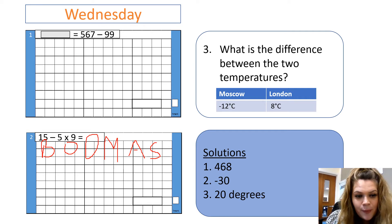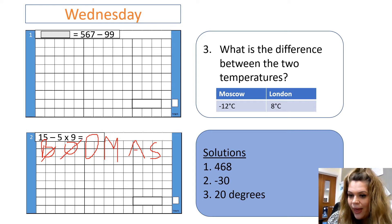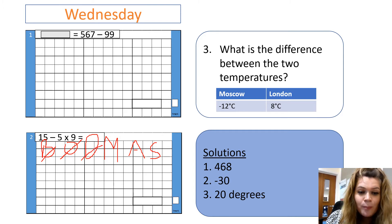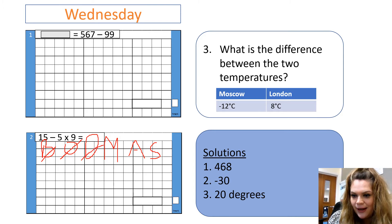So, I can see I've got no brackets, so I don't need to use that. I can see I've got nothing to order, I've got nothing to square or cube. I can see I've got no division, but I do have a multiplication. I've got 5 times 9. 5 times 9, I know, is 45. Perfect.